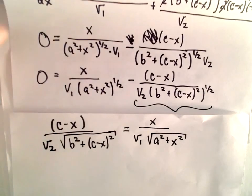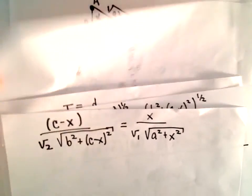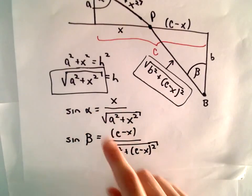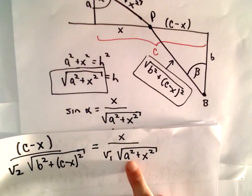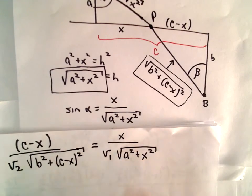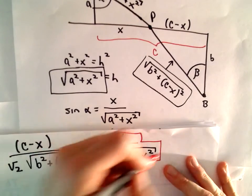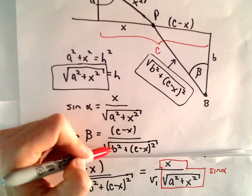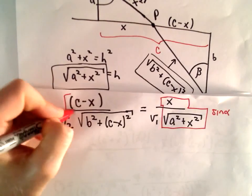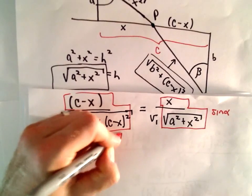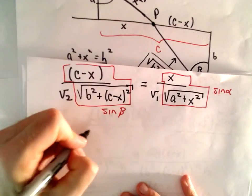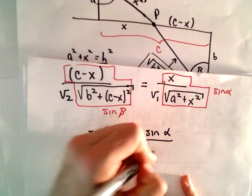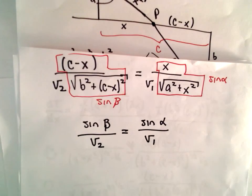Going back to our original trigonometric expressions, we said sine of alpha equals X over √(A² + X²), and that's exactly what appears on the right side. And (C − X) over √(B² + (C−X)²) equals sine of beta, which is exactly the left side. So what we have is sine of beta over V₂ equals sine of alpha over V₁, which is precisely what we wanted to show — Snell's Law.